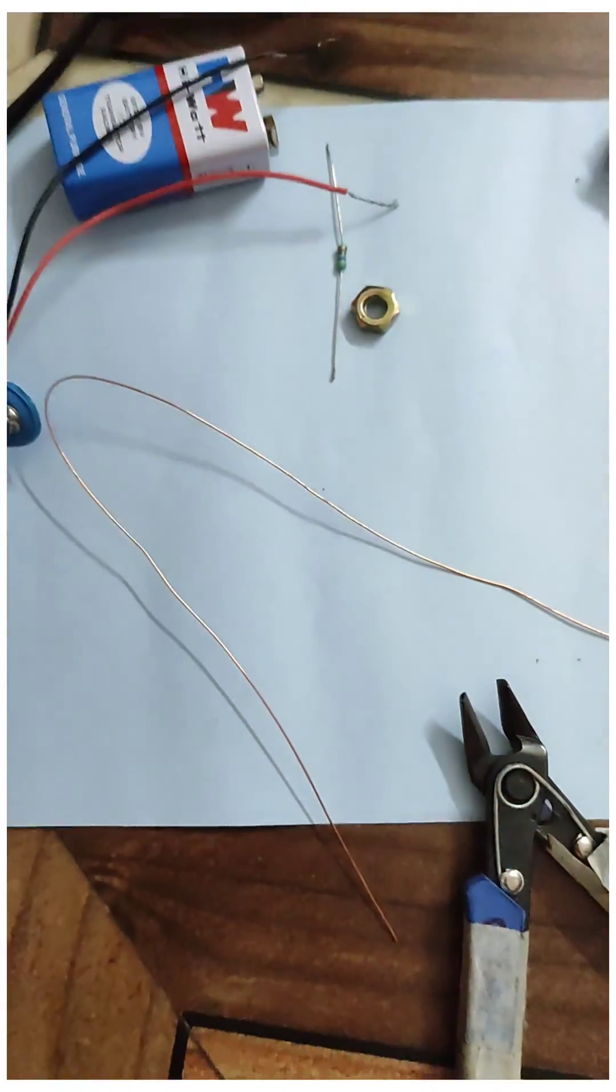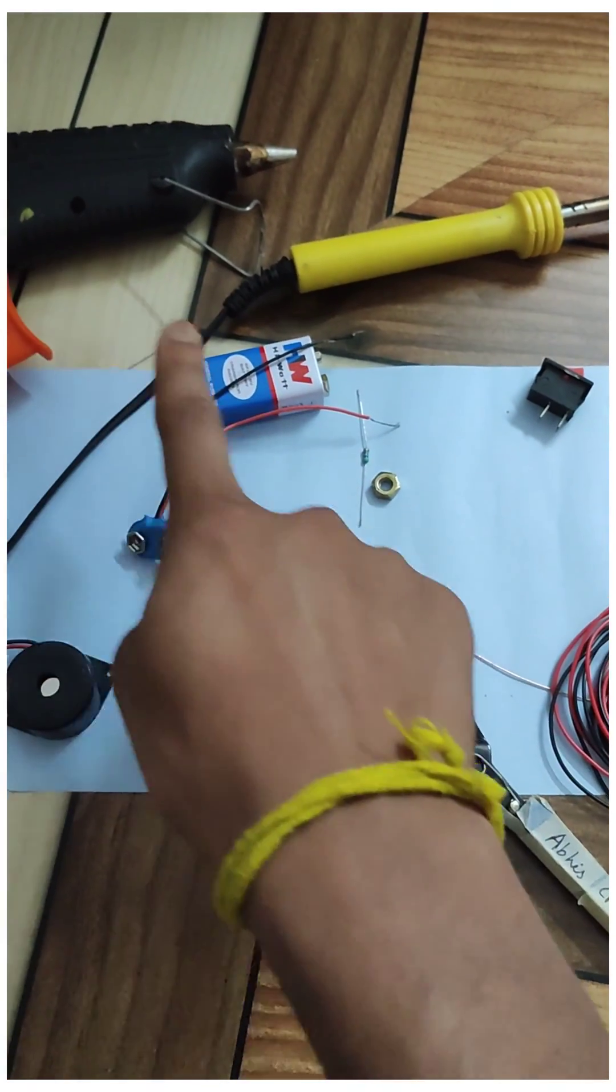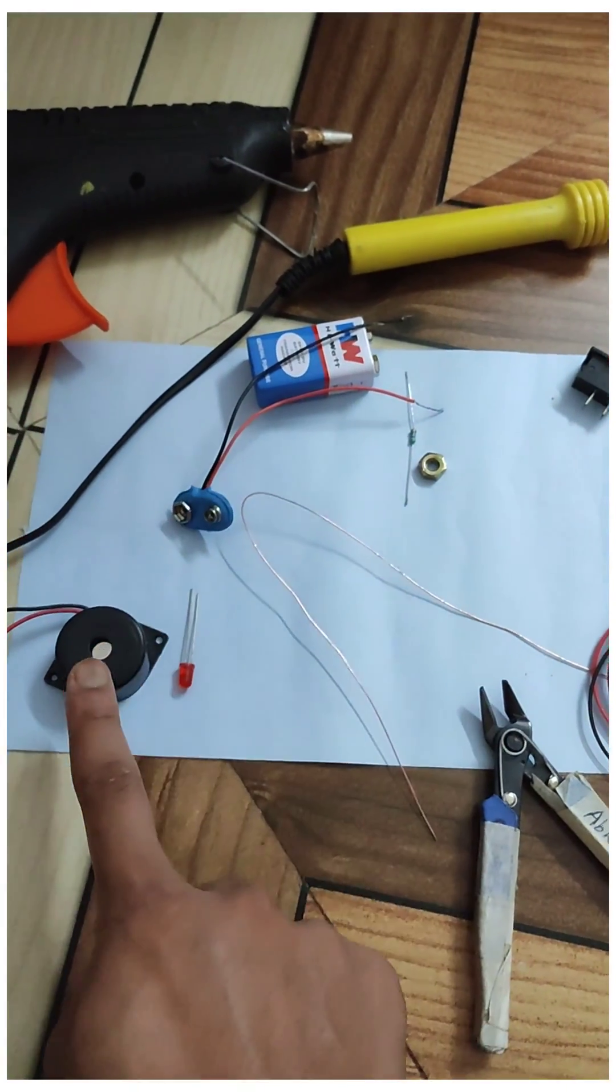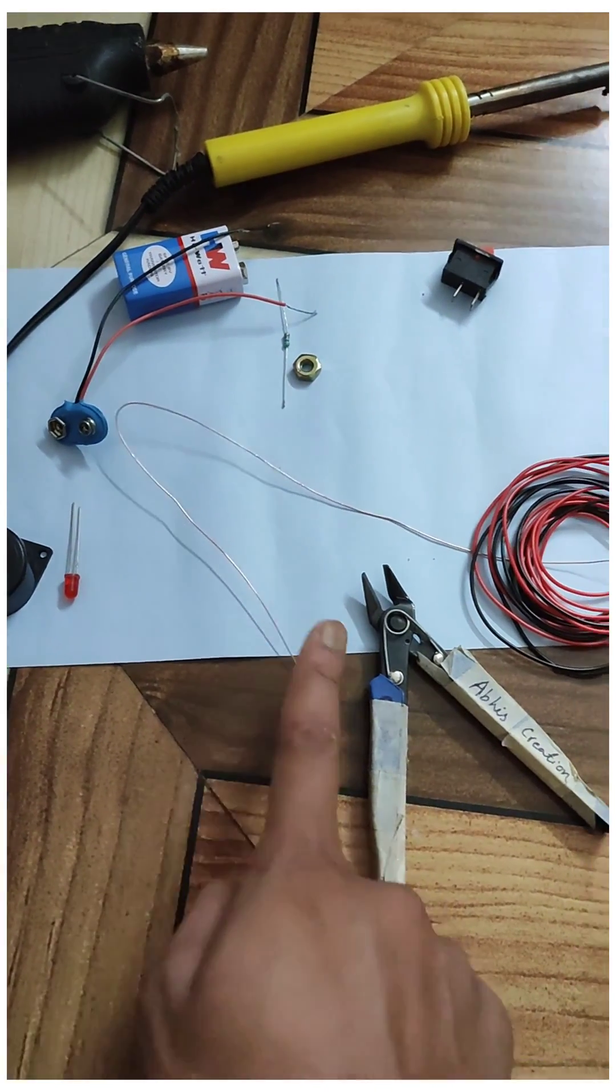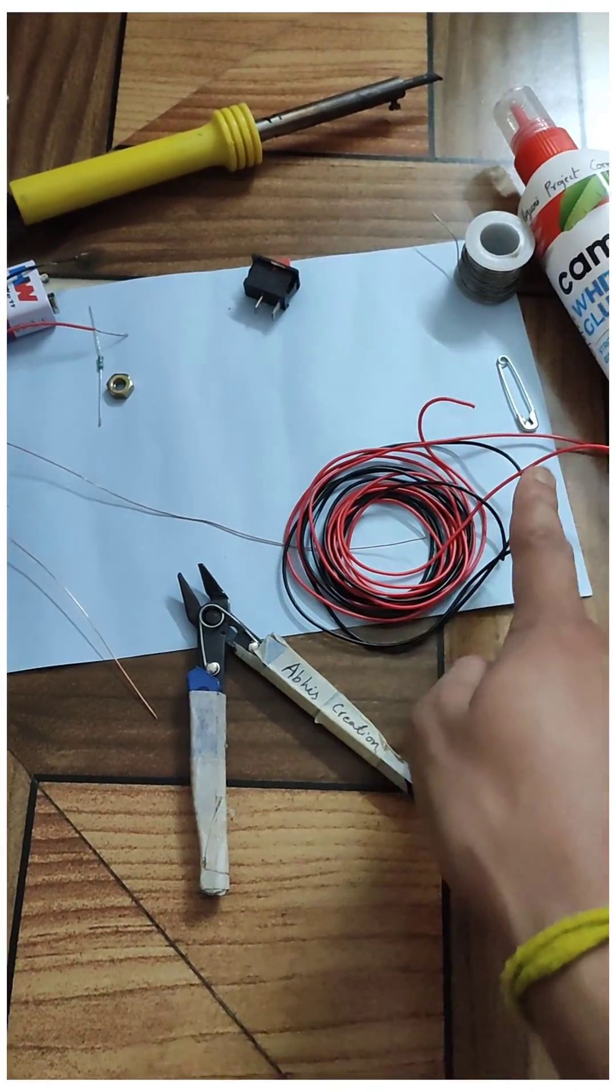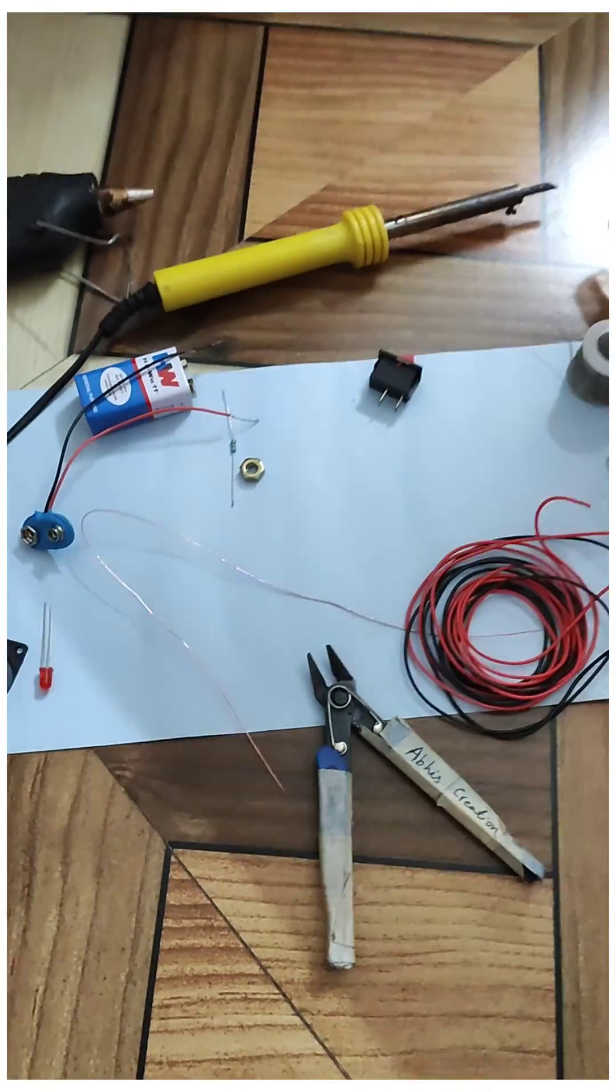In this project we are using some electronic components like soldering iron, glue gun, 9 volt battery, 9 volt battery clip, buzzer, LED, resistor, one nut, copper wire, wire, glue, switch and cardboard.